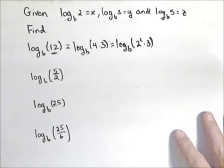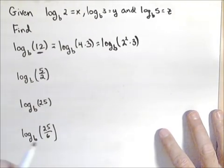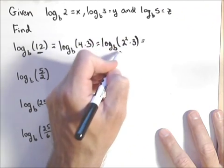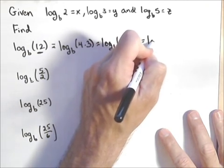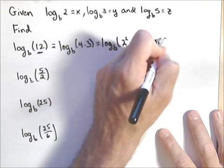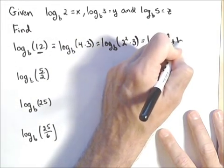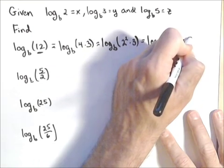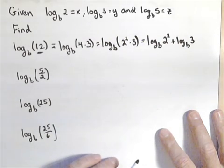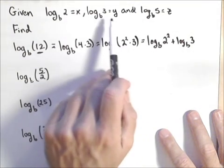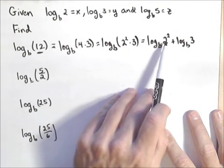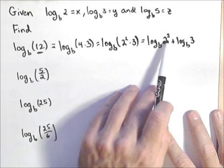Now here's why that's going to be useful. My product to sum says I can rewrite this as log base b of 2 squared plus log base b of 3. Now, the log base b of 3 we know is equal to y, but I don't quite have log base b of 2. I have log base b of 2 squared.